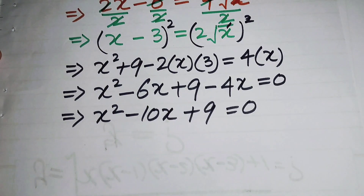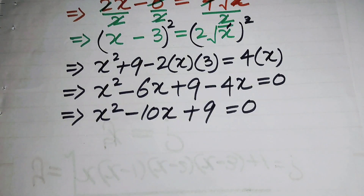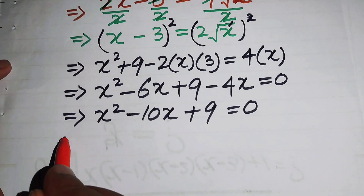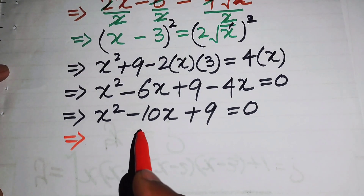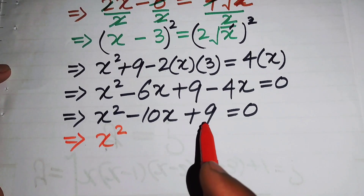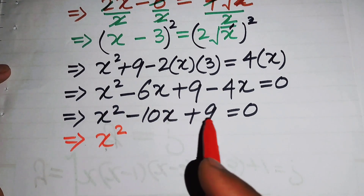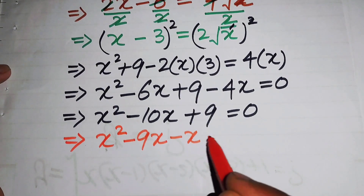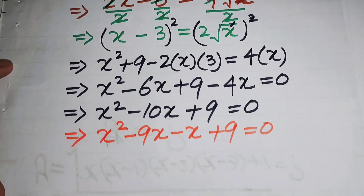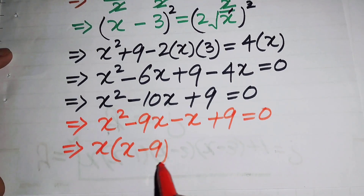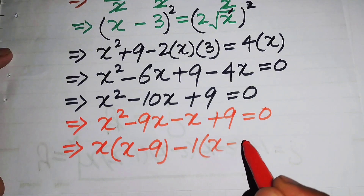To factor this equation, we break the middle term. We need two numbers whose product is positive 9 and whose sum is minus 10. Those numbers are minus 9 and minus 1. So we write x squared minus 9x minus x plus 9 equals 0, then take x common from the first two terms to get x(x minus 9).